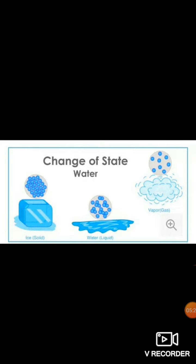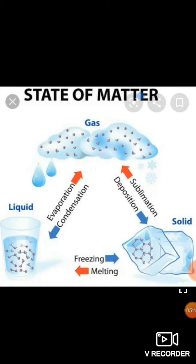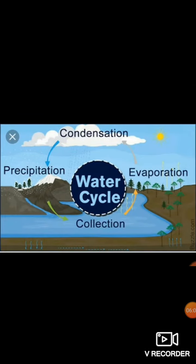Water also changes its state: first it is found in the form of liquid water, then it converts into solid, and the solid again converts into water, which then evaporates and changes into water vapor. A cycle is going on — liquid changes into gas, comes back as liquid, and accumulates somewhere as liquid and somewhere as solid. These are the states of water.